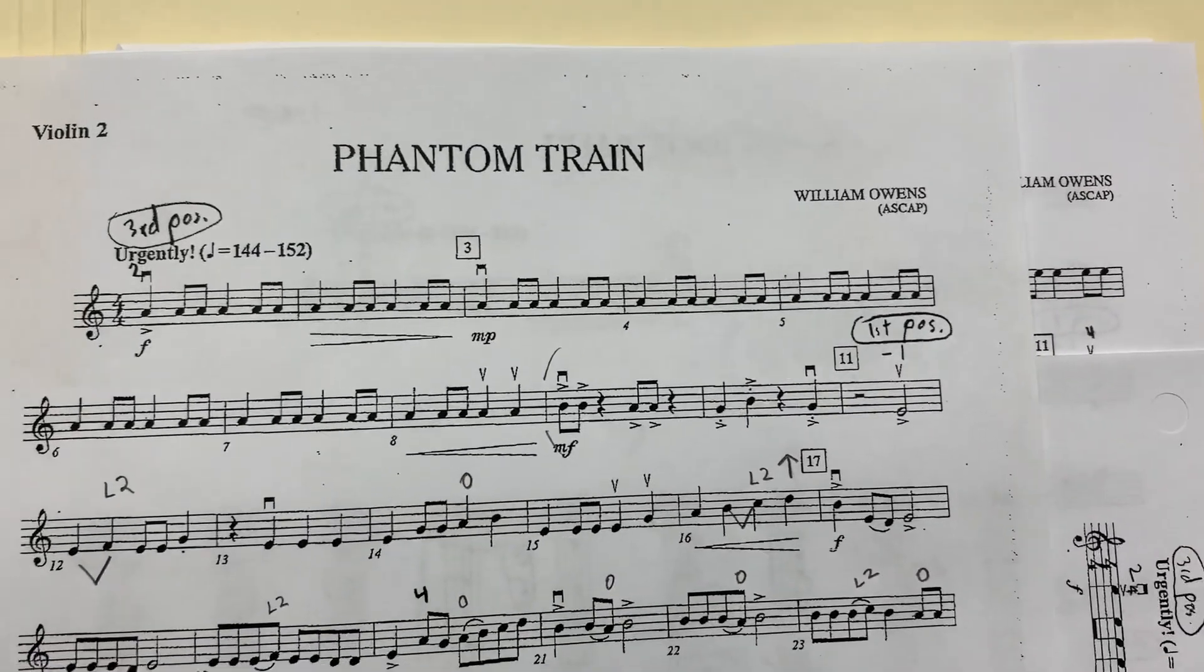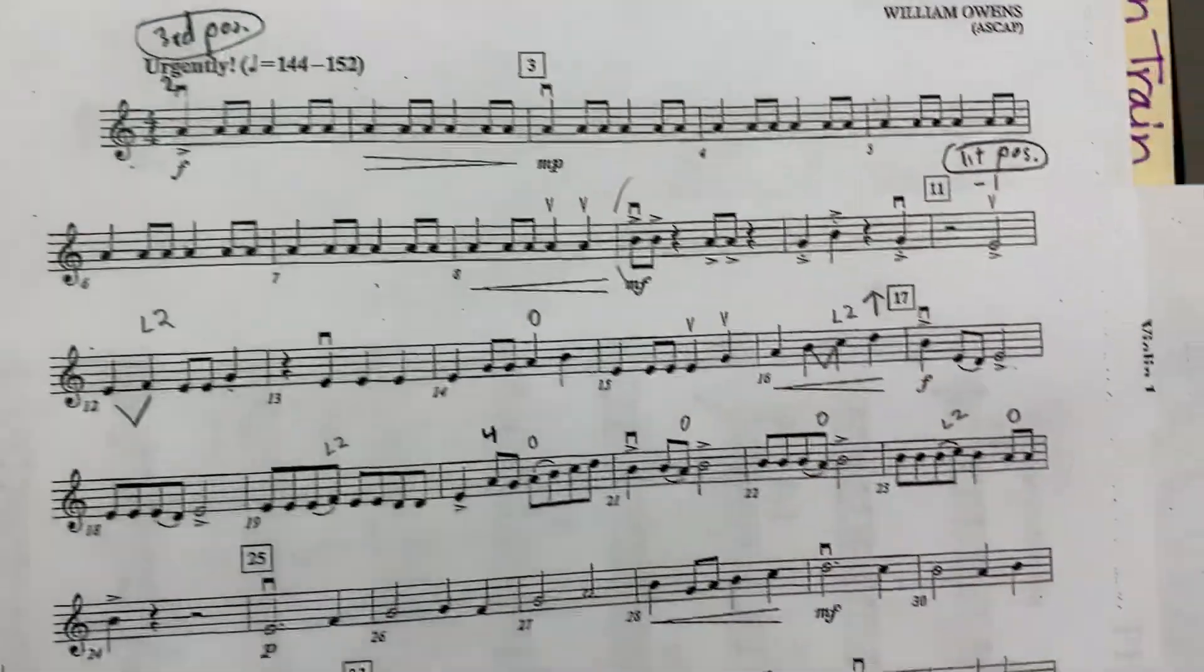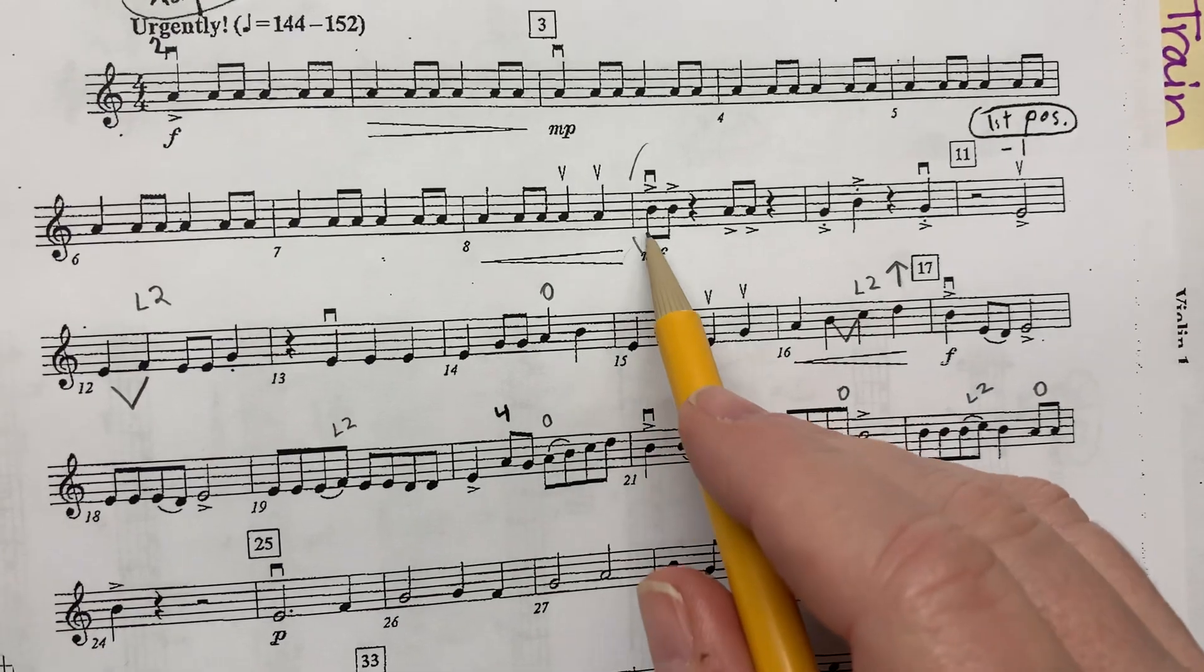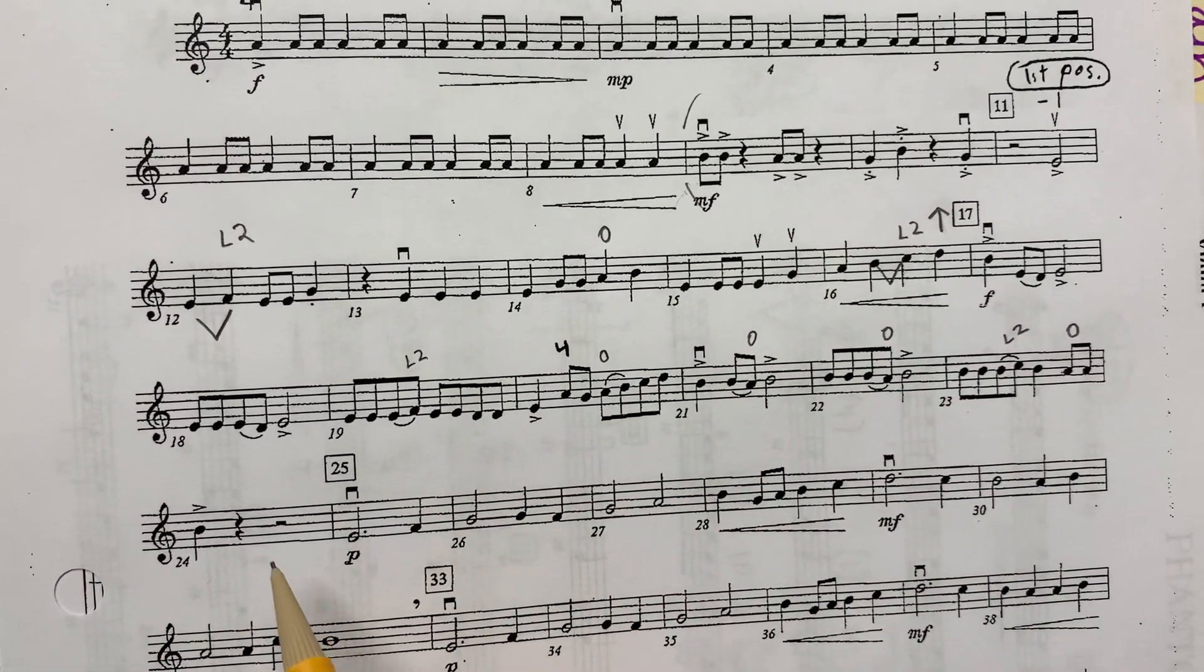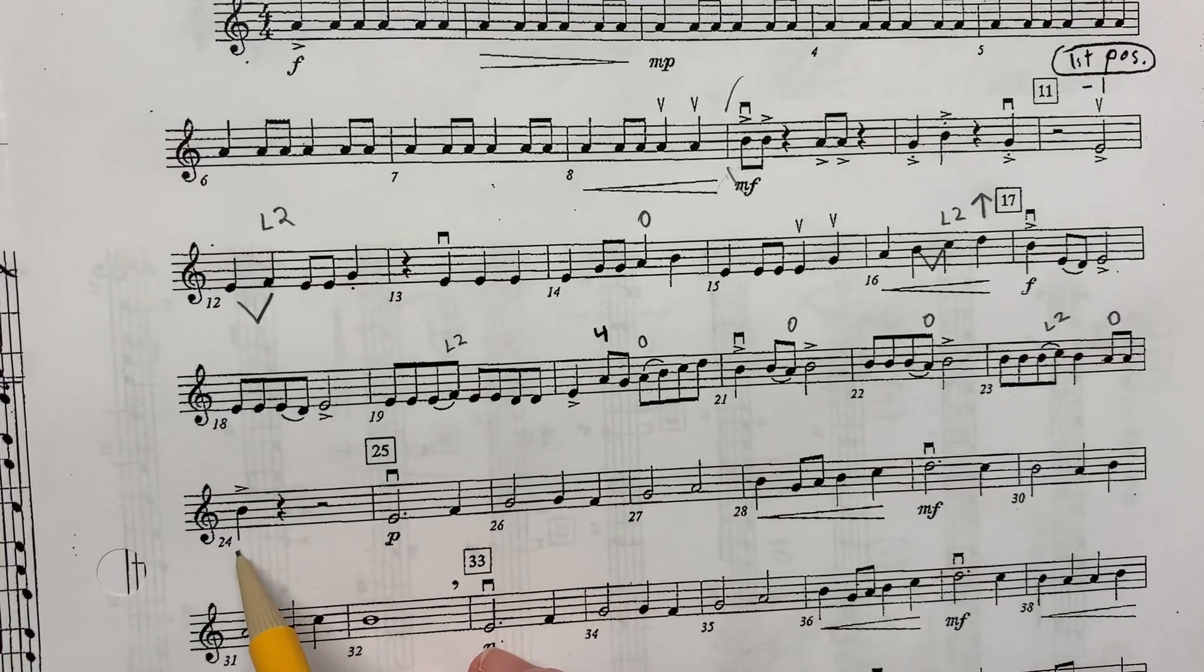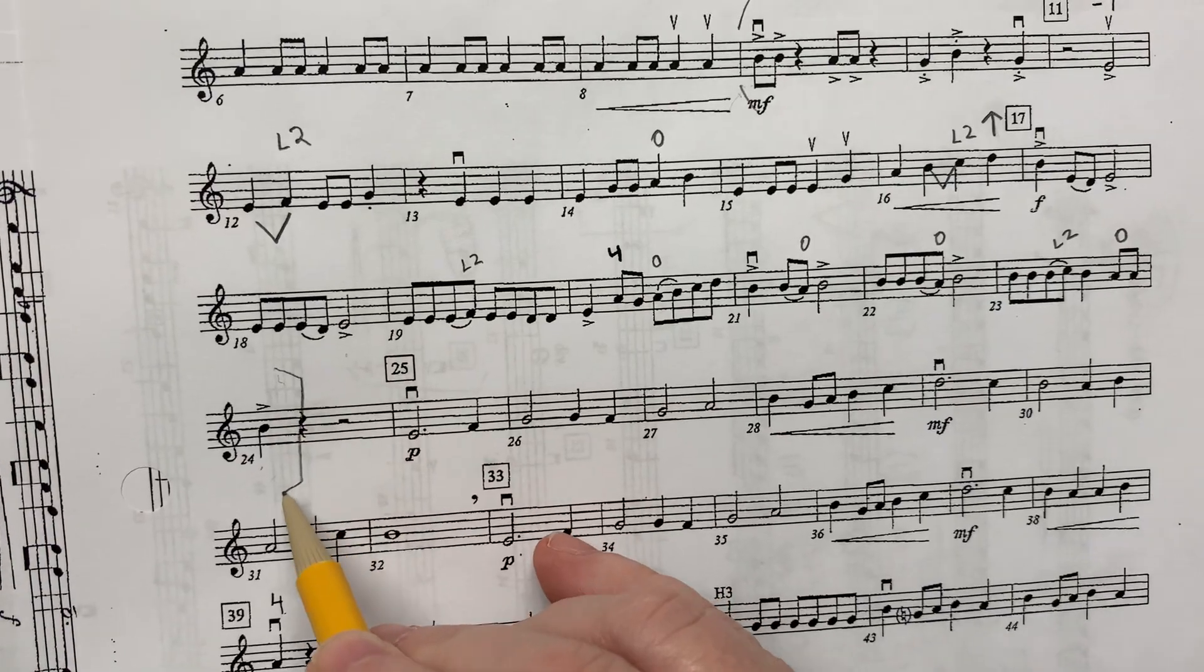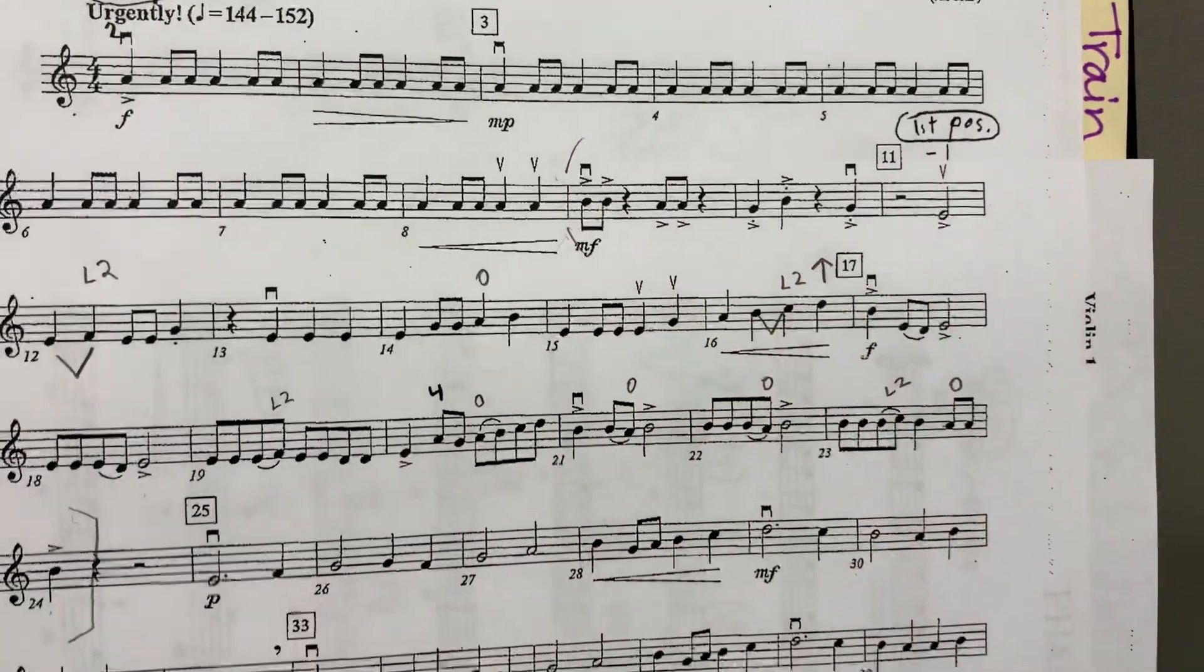Okay, so this is going to be Phantom Train, Second Violins. This is your first pass off, and we're going to go from measure 9 to the downbeat of 24. So we're going to end here. We're starting here. Let's talk through it.